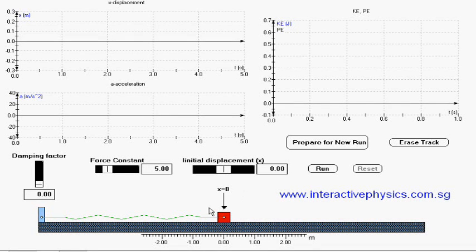We can set the spring into oscillation by compressing it or by extending it. The graphs for the displacement and acceleration are shown here in real time, while the graphs for KE and PE are shown here on the right hand side. Now let's run it.